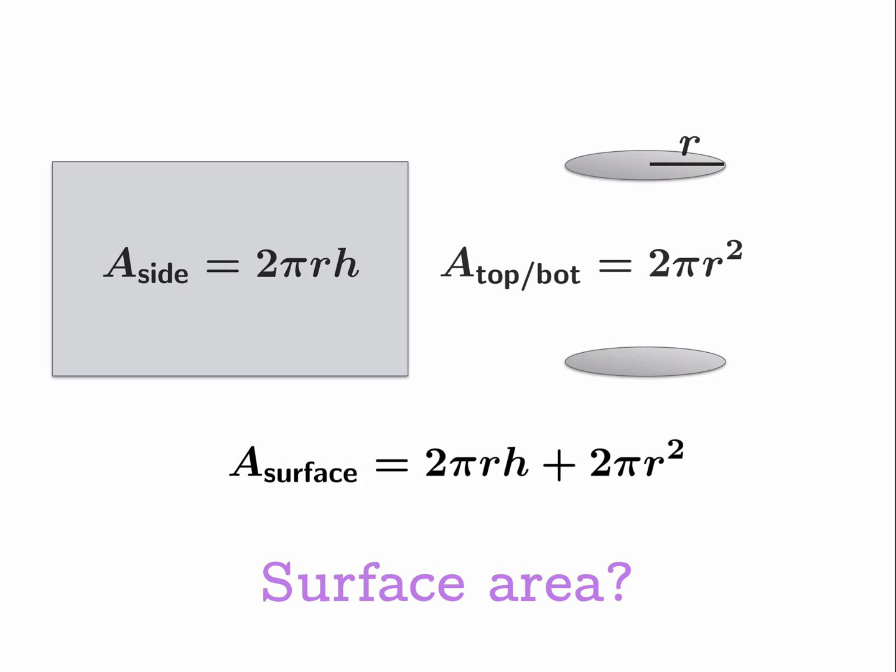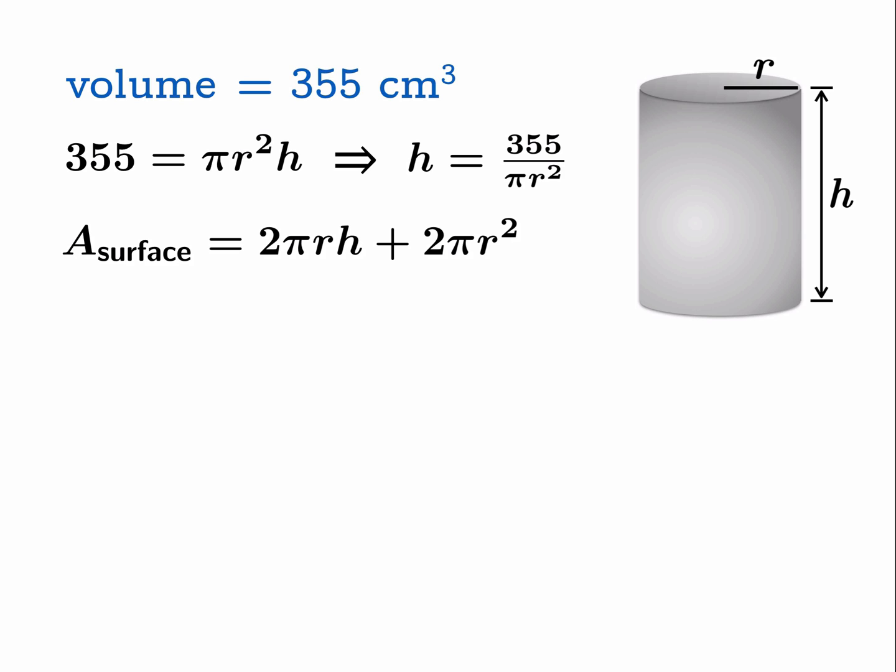We want to figure out how to make this surface area as small as possible. What we need to do is find some variable we can tune, some parameter that we have control over, and find the surface area in terms of that parameter. Well we've already got h in terms of r, so let's substitute. We'll take h equals 355 over pi r squared, substitute that into h, and we get this formula for the surface area. We can do a little cancellation, simplify it, and we get this nice formula for surface area as a function of r.